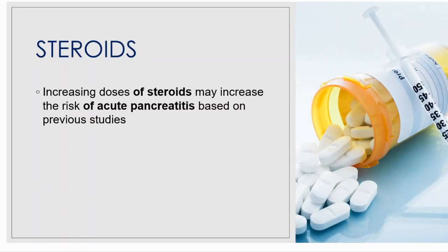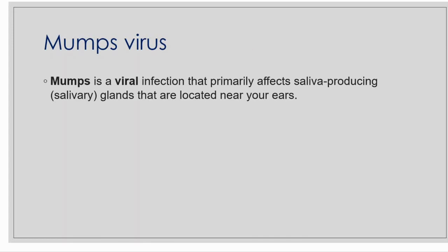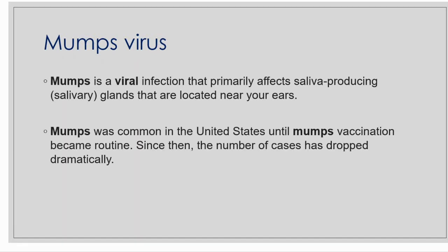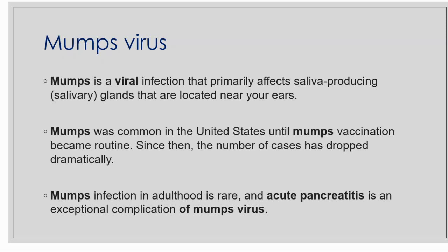Steroids are also important in acute pancreatitis — increasing doses of steroids may increase the risk based on previous studies. Mumps virus is a viral infection that primarily affects salivary glands located near your ears. Mumps was common in the United States until vaccination became routine, since when cases have dropped significantly. Mumps infection in adulthood is rare, and acute pancreatitis is an exceptional complication of mumps virus.